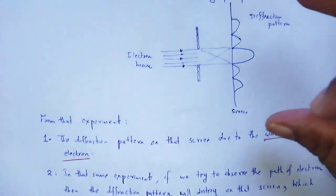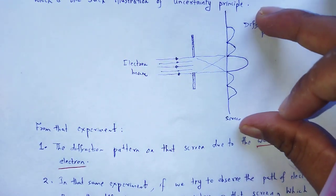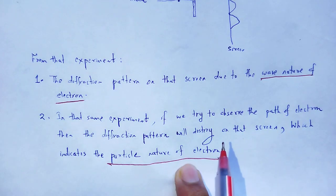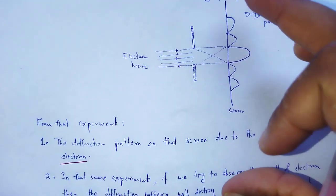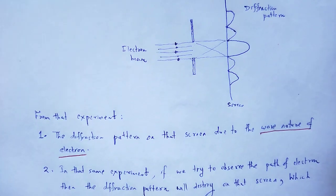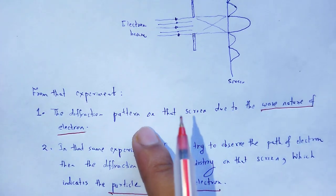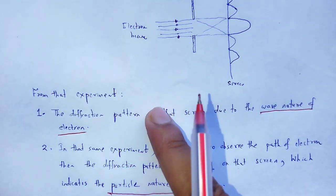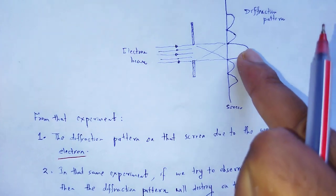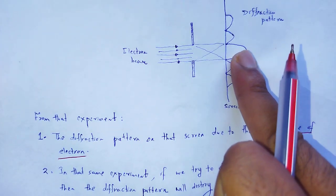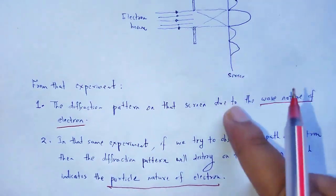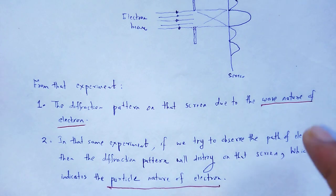So, in the same experiment, we see the wave nature and the particle nature, but these two are not simultaneous. When we observe the diffraction pattern due to the wave nature, then the particle nature is silent, and when we observe the particle nature, then the wave nature is silent.